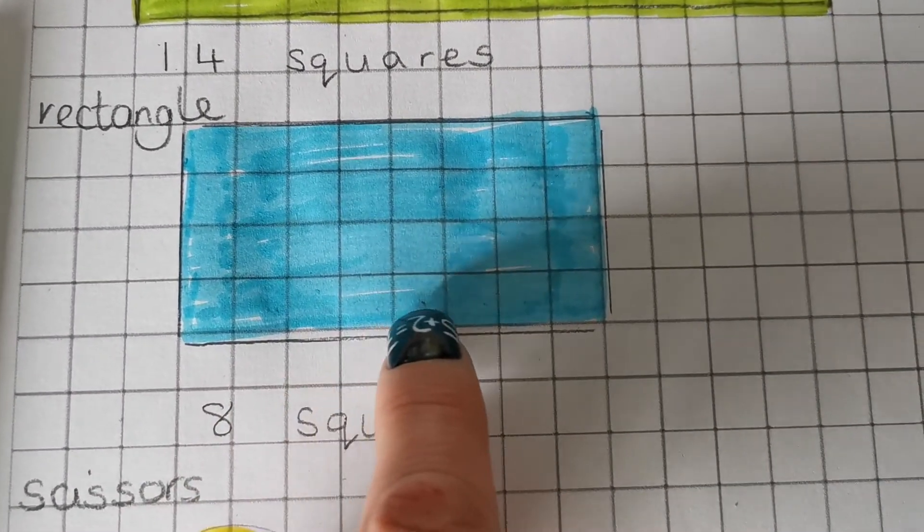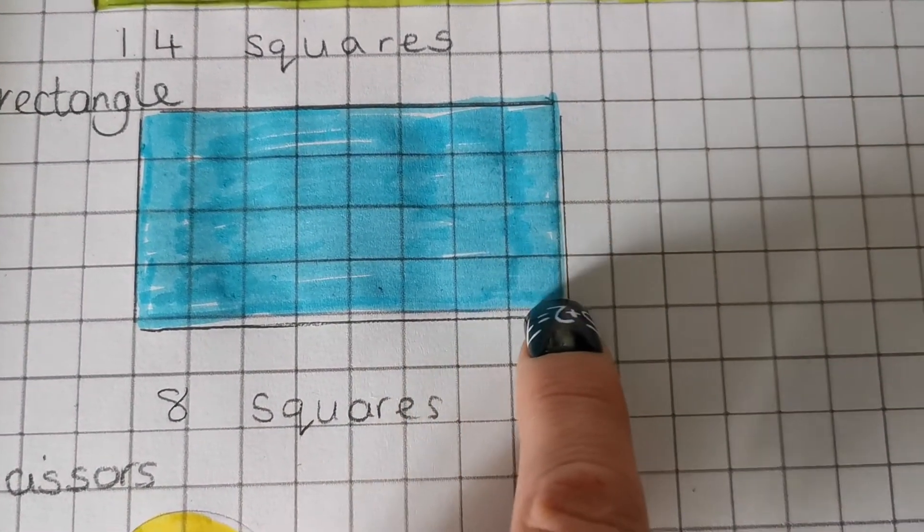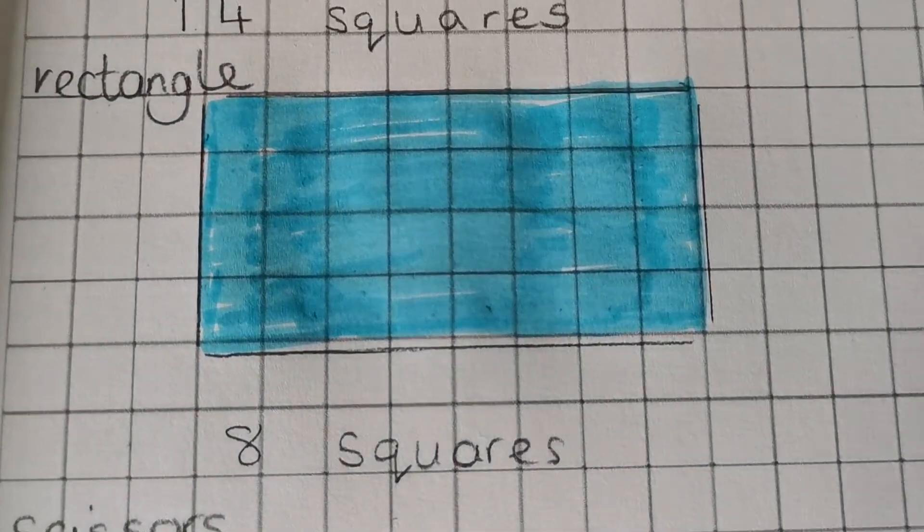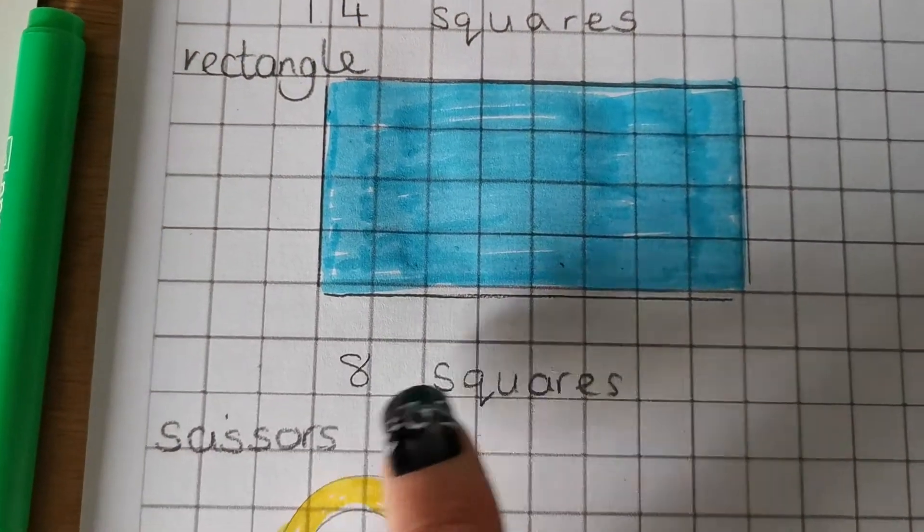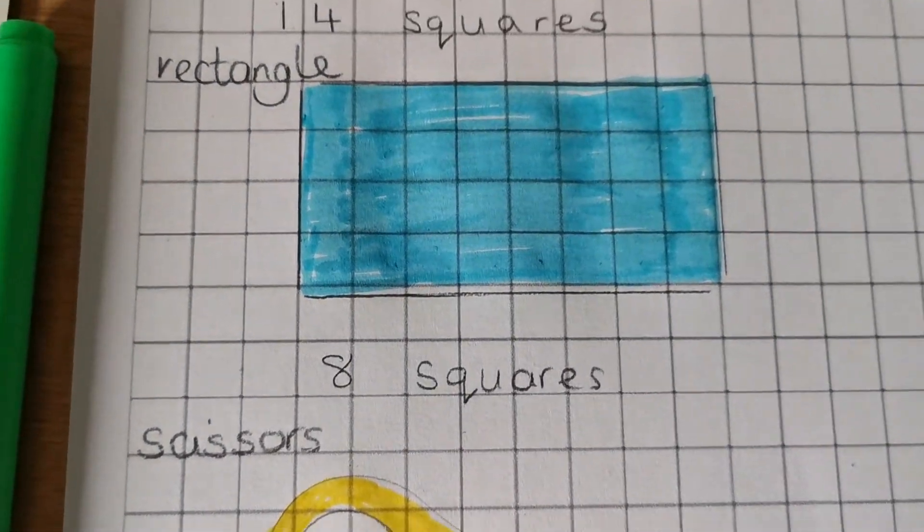One, two, three, four, five, six, seven, eight. So the length is eight squares. So I've written that underneath. So the rectangle is eight squares long.